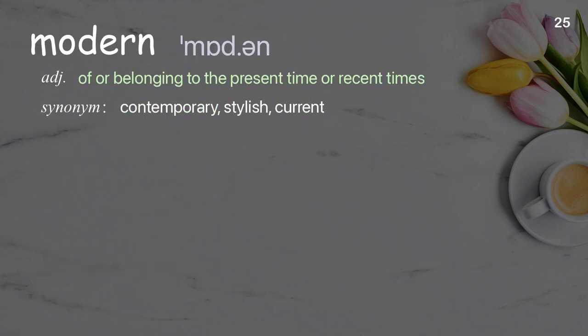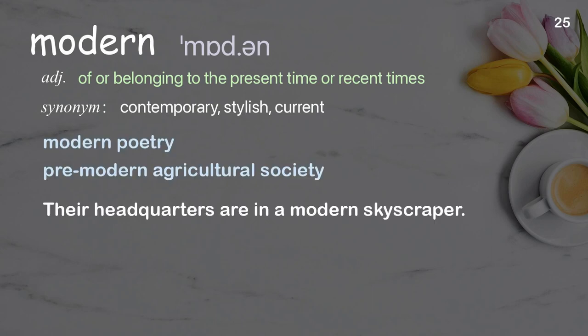Modern: of or belonging to the present time or recent times. Examples: modern poetry, premodern agricultural society. Their headquarters are in a modern skyscraper.